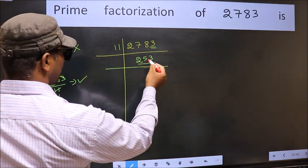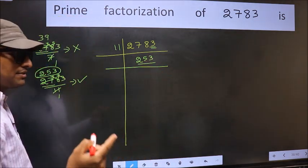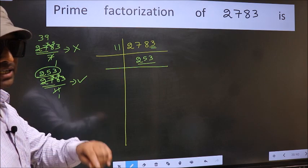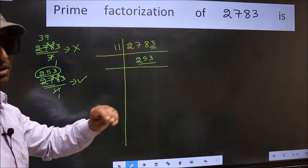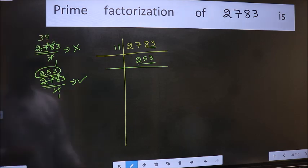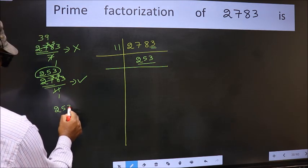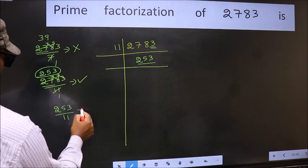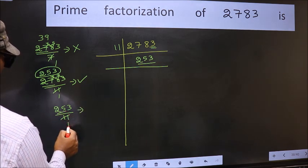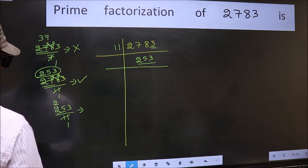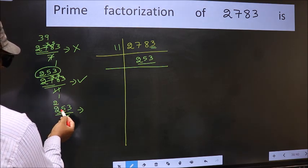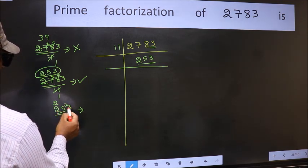Now for this number we don't need to check divisibility by 2, 3, 5 and 7. We should start checking from 11 onwards. So let us check with 11. A number close to 25 in 11 table is 11×2 is 22. 25 minus 22 is 3, 3 carried forward gives 33.